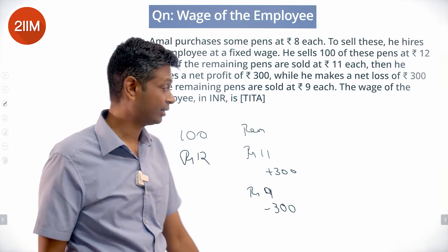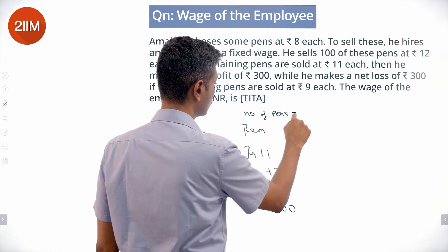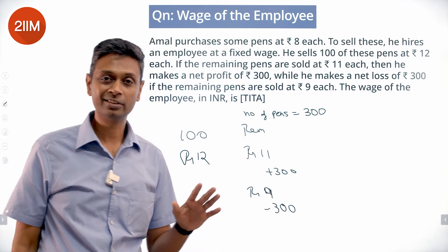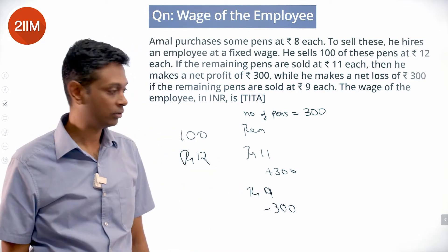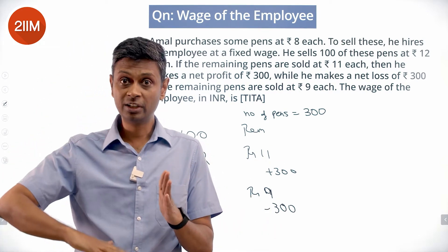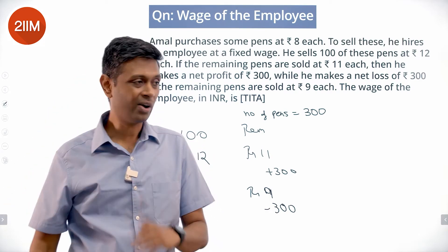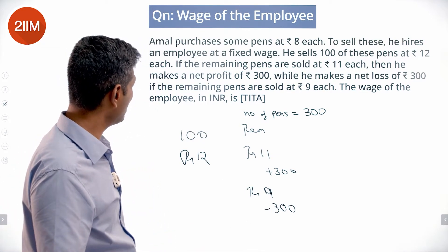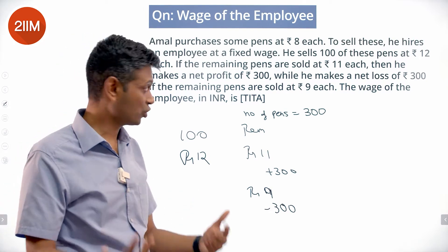This Rs. 2 per pen lesser creates a Rs. 600 swing, so the number of remaining pens equals Rs. 600 ÷ Rs. 2 = 300 pens. Losing Rs. 2 per pen ends up making a swing of Rs. 600 — from a profit of Rs. 300 I go to a loss of Rs. 300. So if I reduce the price by Rs. 2 per pen I lose Rs. 600, meaning there are 300 remaining pens.